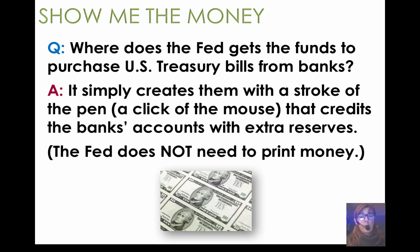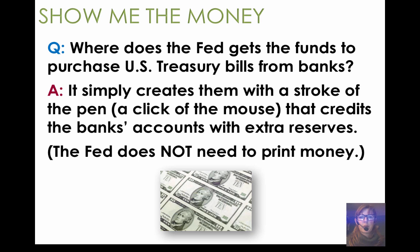Some worry that when the Fed buys bonds and expands the money supply to get interest rates down, it will create Zimbabwe or Germany-type hyperinflation. Part of those fears come from a misunderstanding: it's not actual printing of cash that happens, but electronic money that's created — and electronic money can be created and destroyed very easily. The Federal Reserve will increase the money supply electronically on days they need to bring interest rates down and vice versa; every single day they're adjusting the money supply up and down. It's not a permanent thing.